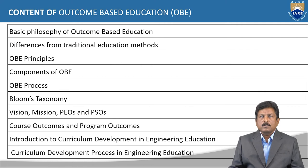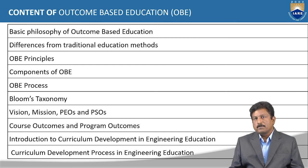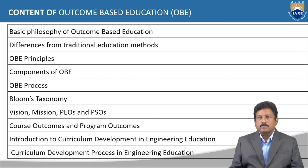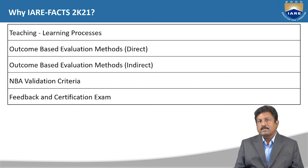Coming to the content of the Outcome-Based Education system module. Topics include: basic philosophy of OBE, differences from traditional education methods, OBE principles, components and process of OBE, Bloom's taxonomy, vision and POs of the institution, course outcomes and program outcomes of the department. Also covered: introduction to and the process of curriculum development in engineering education, the teaching-learning process, outcome-based evaluation by direct and indirect methods, NBA validation criteria, and finally, feedback and examination.